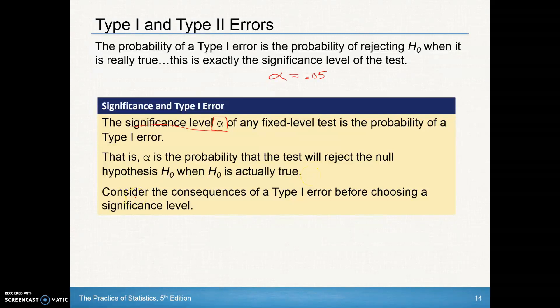So you need to consider those consequences of a type 1 error before choosing a significance level. To see, you know, what probability do we want, what's the significance of setting it at that level. Can we afford to put it a little higher, or should we make it a little bit lower? And we'll look at that as we progress through this chapter.